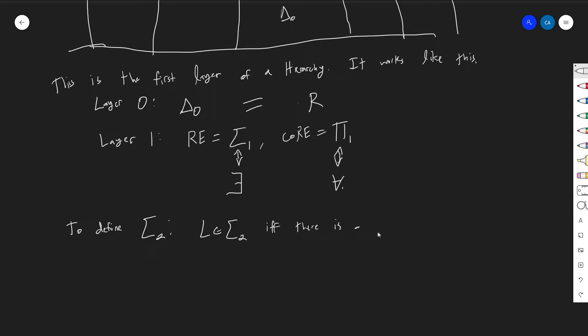If there is a computable problem L, or sorry, not L, but like J, such that Y, I'll say Y is in L, if and only if there exists a Y1, such that for all Y2, it is the case that you have this triplet, Y1, Y2, I'm sorry, I should have used X's. I'll say X here. So X is in L, if and only if there exists a Y1, such that for all Y2, Y1, Y2, and X, this triplet is in J.